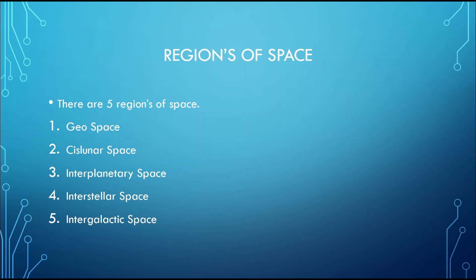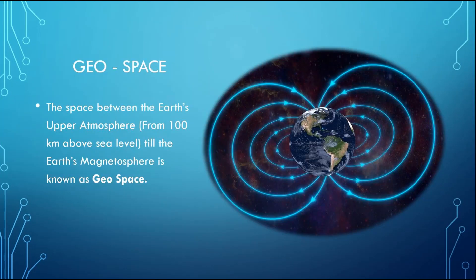There are five regions of space which consist of geospace, cislunar space, interplanetary space, interstellar space and intergalactic space. We will be discussing about this more deeply further.